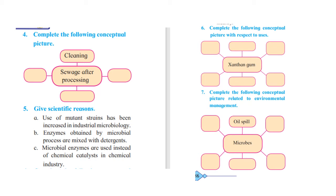The next diagram is microbes related to environmental management. This is not given exactly like this in the textbook — it is just certain headings. The blanks are: bio insecticides, microbial pollution, microbial pollution control, production of fertilizer, and sewage management.